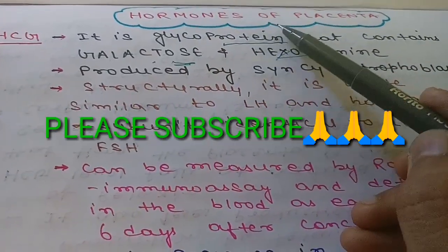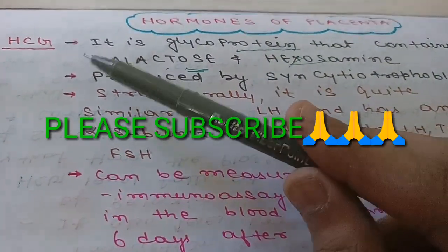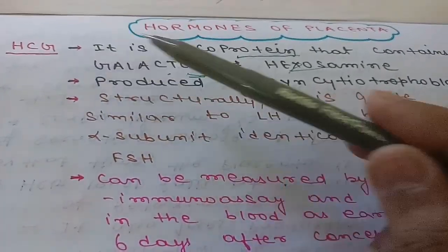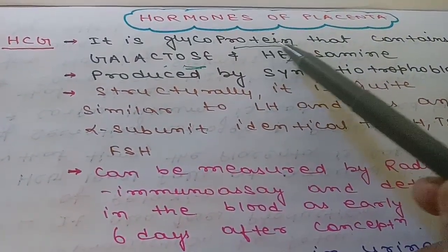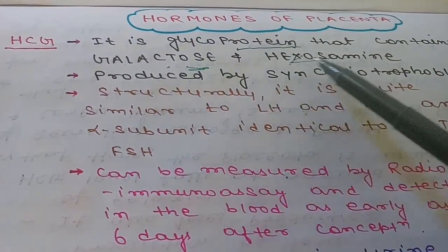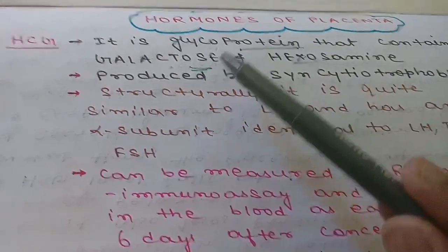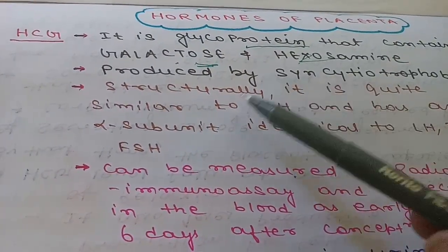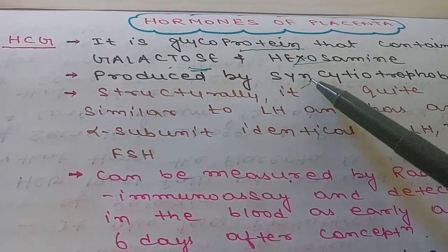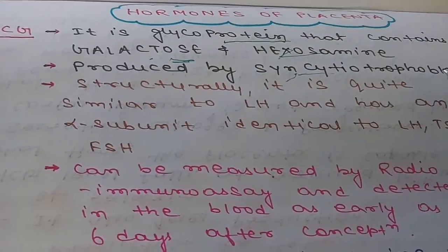We are going to discuss the hormones of placenta. The first is HCG, that is Human Chorionic Gonadotropin. It is basically a glycoprotein and it contains galactose and hexosamine along with protein, so it is an example of a glycoprotein.